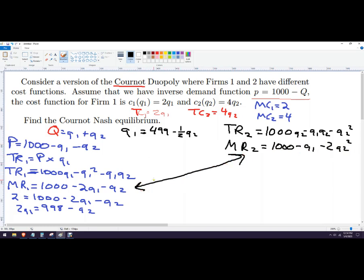However, what's different is the profit maximizing response function. So marginal revenue 2, we're going to set that equal to marginal cost of 2. So that's this whole thing. So 4 equals 1,000 minus Q1 minus 2Q2.